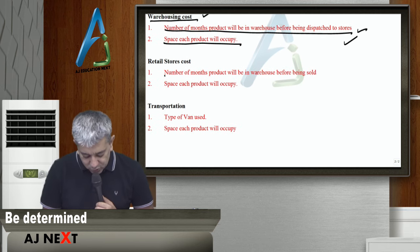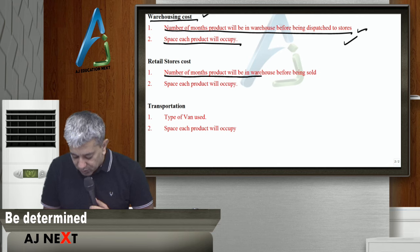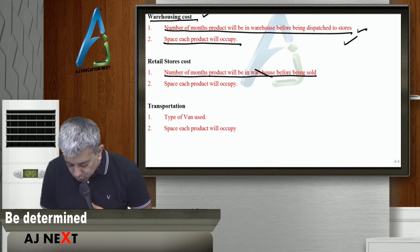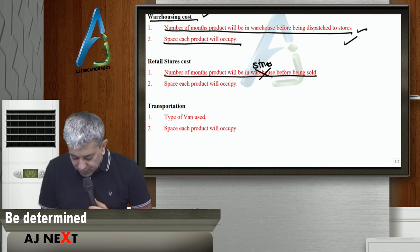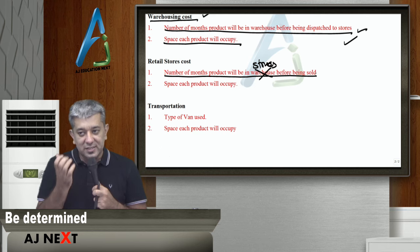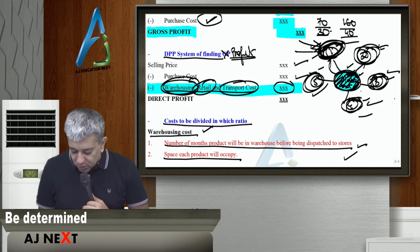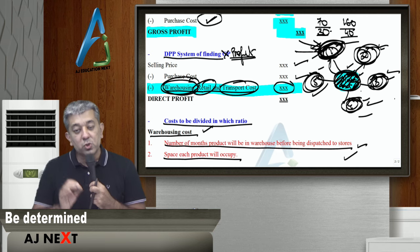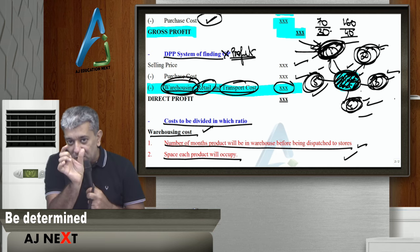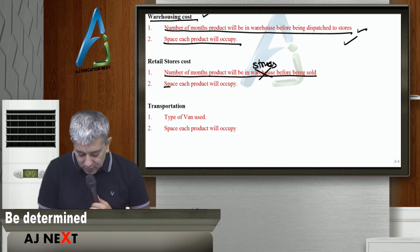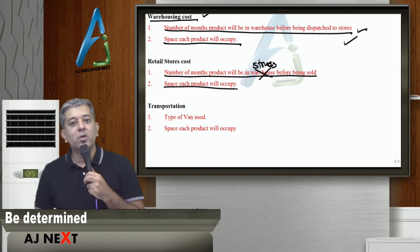Second retail store cost, same cheez. Number of months before the product will be in the warehouse, before being stored. Yeh stores hona chahiye. Number of months product will be in the stores, before being sold. Example, koi ek product store number one ke andar aa gaya. Thik hai? Store number one ke andar aa gaya. Usko tera din lagta hai. Toh tere din ka cost ho lagna chahiye uske andar. Thik hai? Wo ek cost hai. Dusra, space each product will occupy.